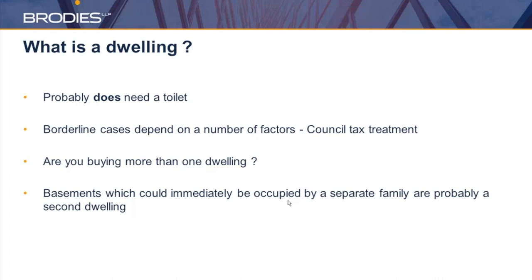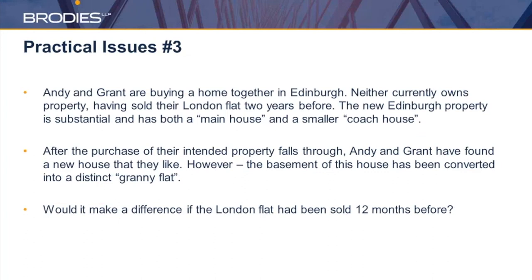Another question raised at a previous seminar: if a couple owns a house in joint names as their main residence, sells that, and buys a new one in the name of just one of them — what's the situation? That's absolutely fine from the ADS point of view. The person buying the new one is replacing the old one, and therefore it qualifies for the replacement of main residence relief. Thank you to everyone for attending. If there are any further questions, we will be sharing slides with contact details, so feel free to drop us an email with anything else you'd like to ask.